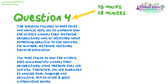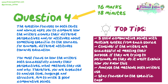Question 4 is always the big one — worth 16 marks — so you want to use your remaining 18 minutes here. It focuses on both texts and always asks you to compare how the writers convey their different perspectives and/or attitudes about something specific, for example different attitudes towards education. You must focus on how the writers successfully convey their perspectives, what methods they use and why. Therefore, you are expected to analyse tone, language and structure, and should aim to write three good comparative points. Top tips: three solid comparative points with multiple quotes from each source; consider if the writers are successful at meeting their purpose — if they are trying to persuade, do they do it well?; explain how you know this; analyse the methods both writers use; and stay focused on the specific task.